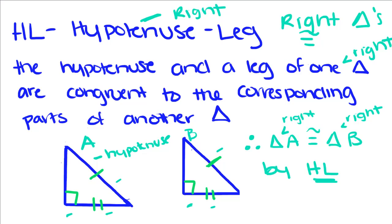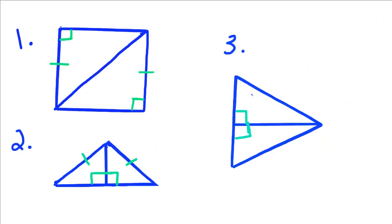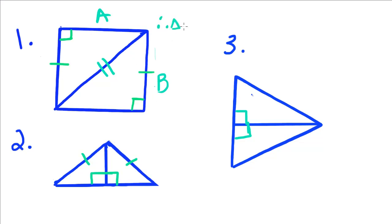Now let's do some examples. For the first one, I have these two triangles. I know that this leg is congruent to this leg. Since they share their hypotenuse, the hypotenuse is congruent to itself. And we know that both angles are right angles. Therefore, triangle A is congruent to triangle B by HL.